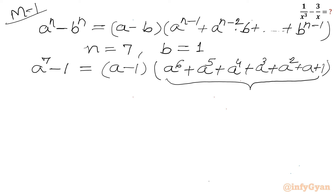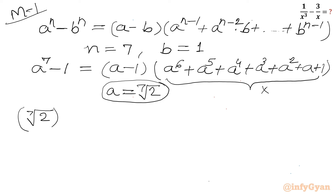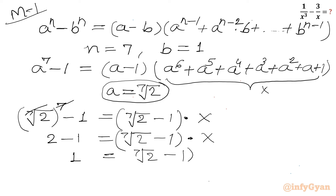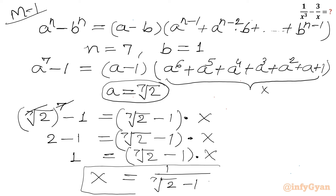Now this bracket is our x. I will apply the substitution a = ⁷√2. So I can write (⁷√2)⁷ minus 1 equals (⁷√2 minus 1) times x, which gives 1 equals (⁷√2 minus 1) times x. So x equals 1 over (⁷√2 minus 1). This is using the binomial expansion method.